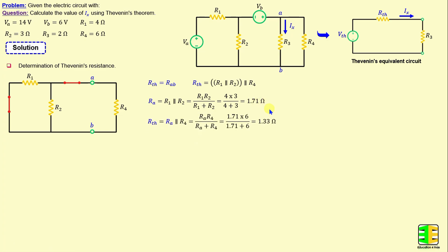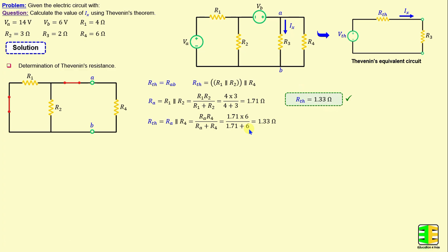Rth equals the parallel combination of Ra and R4. Therefore, Rth can be calculated using the formula Ra times R4 over Ra plus R4. Substituting Ra and R4 with their numerical values, we obtain Rth equal to 1.33 ohms.